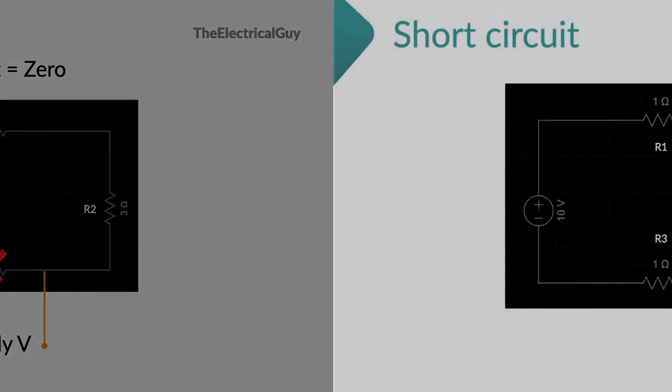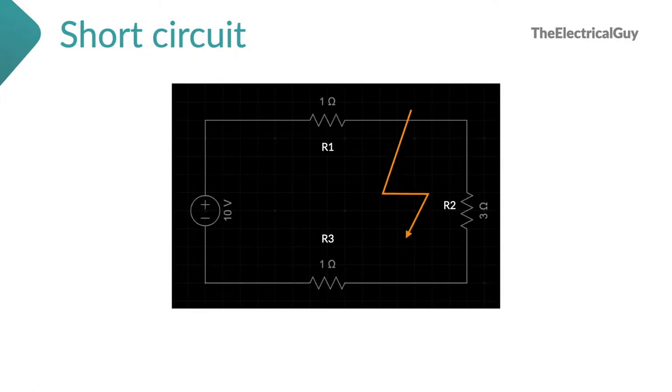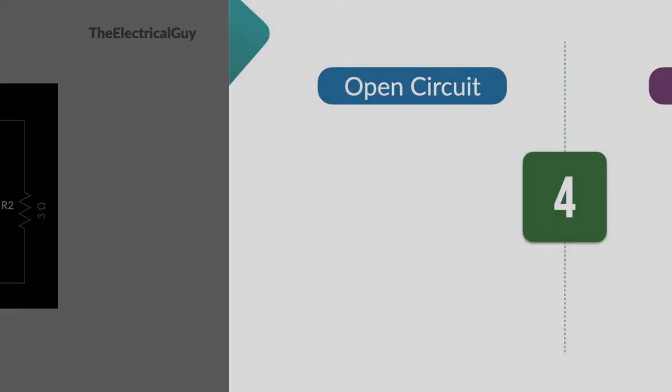Now, in case of short circuit, resistance of the series circuit will drop and hence current more than normal will flow. Since the current is increased, power dissipation across R1 and R3 will also increase.